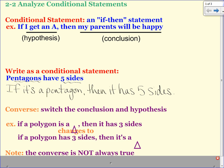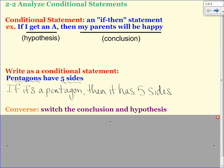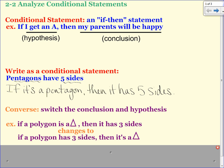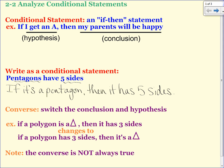When we do switch them around, that is called the converse. So the converse is switching the conclusion and the hypothesis. So this would be an example. If a polygon is a triangle, then it has three sides. The converse would be if a polygon has three sides, then it's a triangle. And that is writing the converse. Now, when you do that, it's not always true.